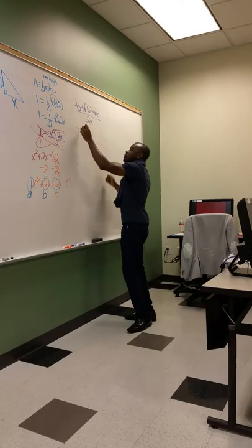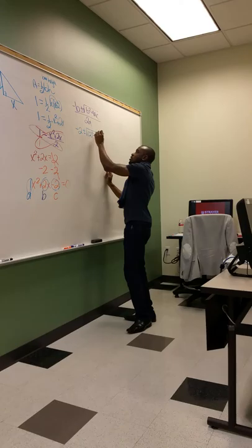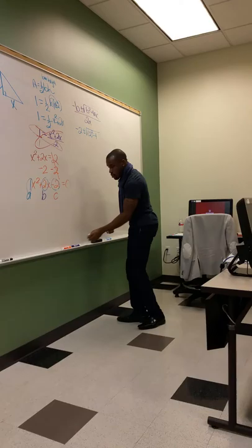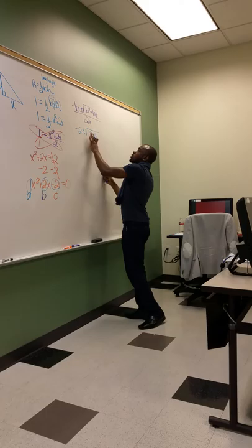So negative 2, excuse me, negative 2 plus or minus the square root of b is 2. Whatever I plug in, I'm going to put in parentheses, minus 4a. I should have did it like this. I should have matched what I had. Okay, so b is here. I'm trying to color code it. I'm trying to color code it to y'all. Let's see.